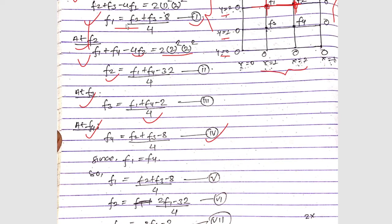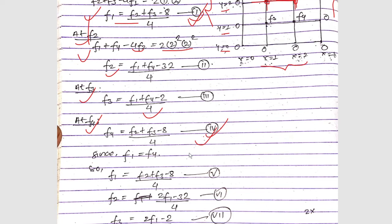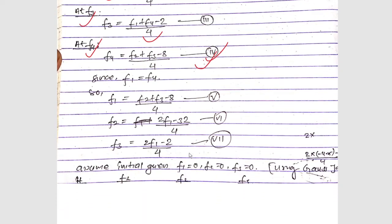We notice that equation 1 (f1 = (f2 + f3 − 8) / 4) and equation 4 (f4 = (f2 + f3 − 8) / 4) are identical. Therefore we can equate them and conclude that f1 = f4.